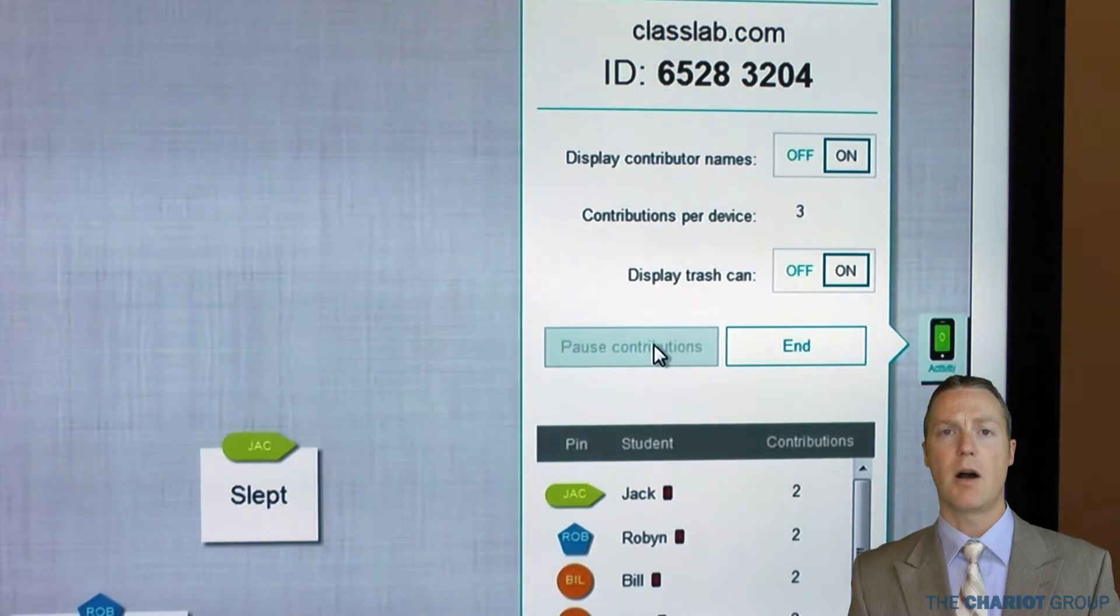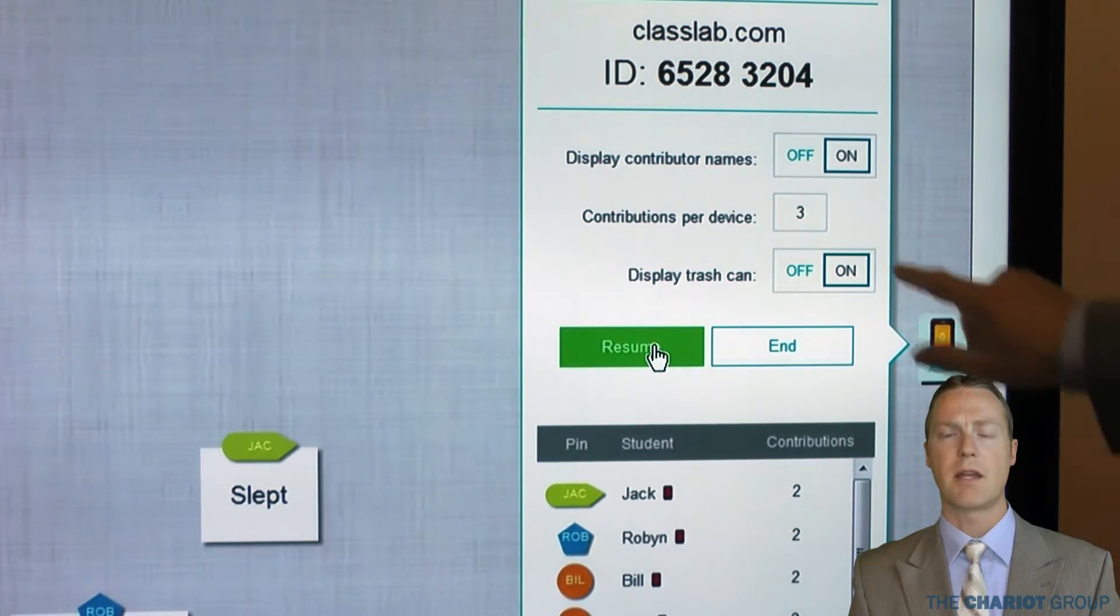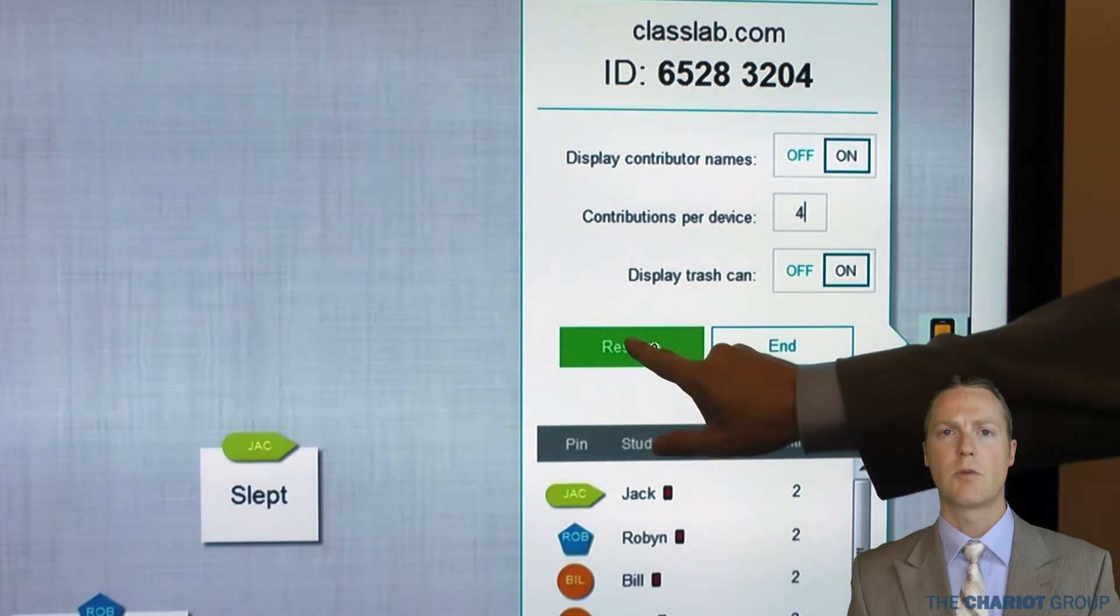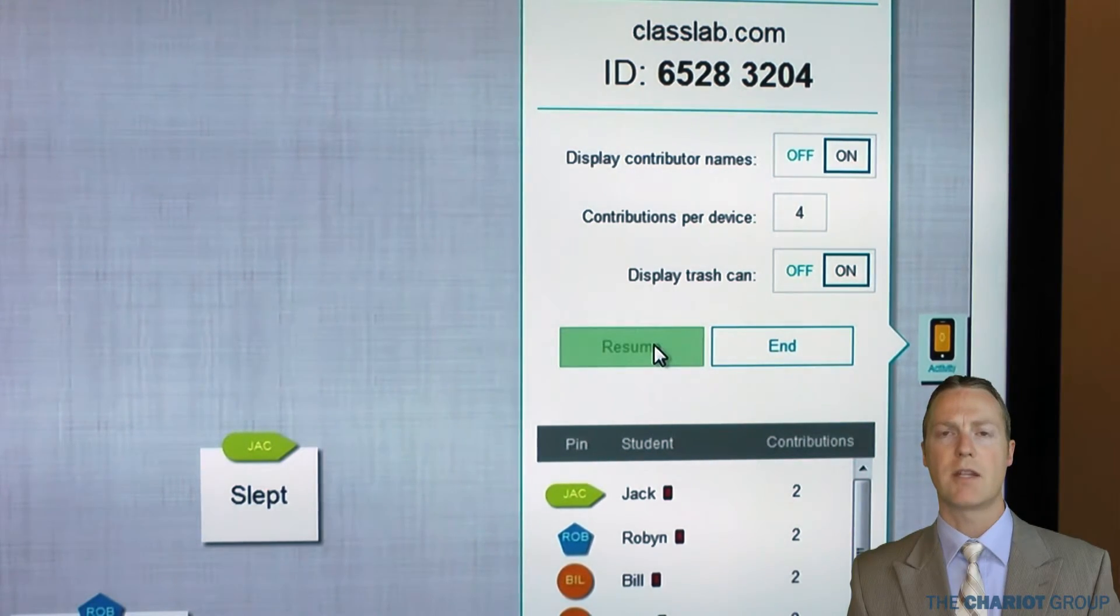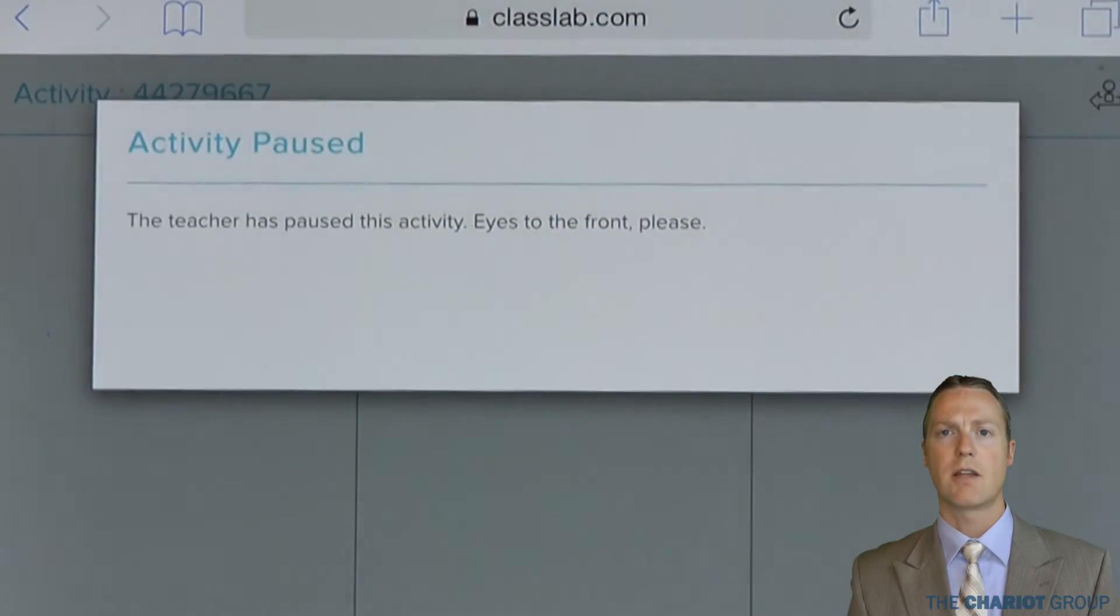It can be changed by clicking Pause Contributions and then updating the number. While the activity is paused, students will get a message on their device that the activity is paused and to turn their attention to the front.